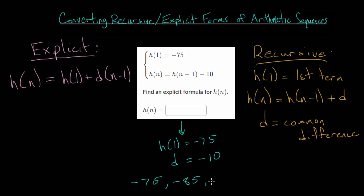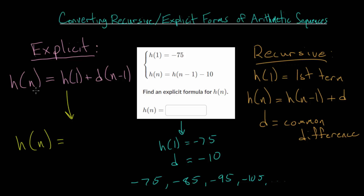Starting at minus 75 and subtracting 10 each time: minus 85, minus 95, minus 105, and so on. But we can also just use this information to plug it into our explicit formula, since we now know d and the first term. So h of n, written in explicit form, is minus 75, and then we'll be adding the common difference — but in this case it's negative, so we're subtracting 10 — times n minus 1.